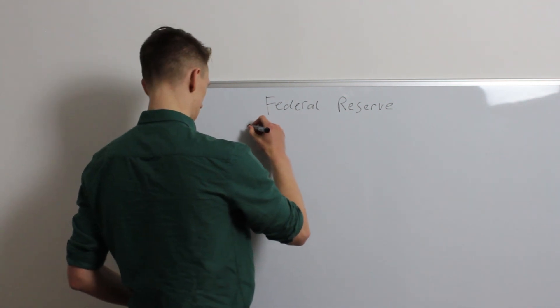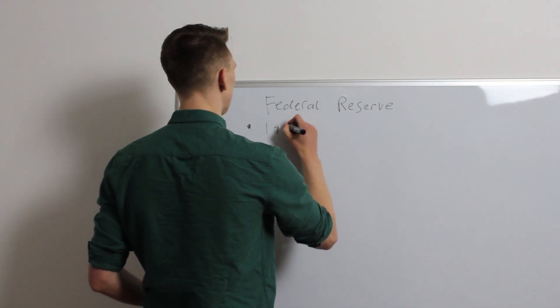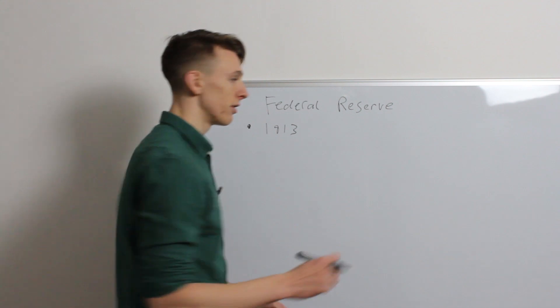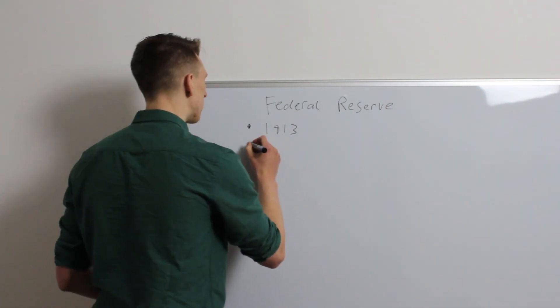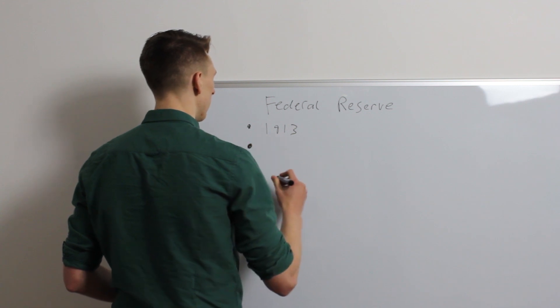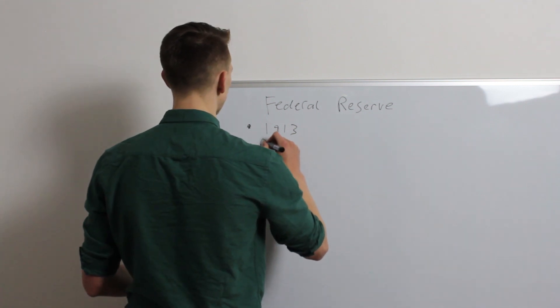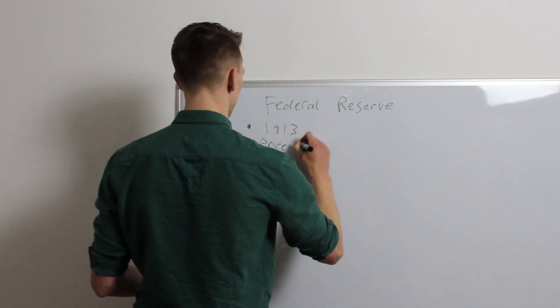I talked about it in the last video. It was established in 1913 under the Federal Reserve Act, and it was established with two main aims. The first one being price stability.